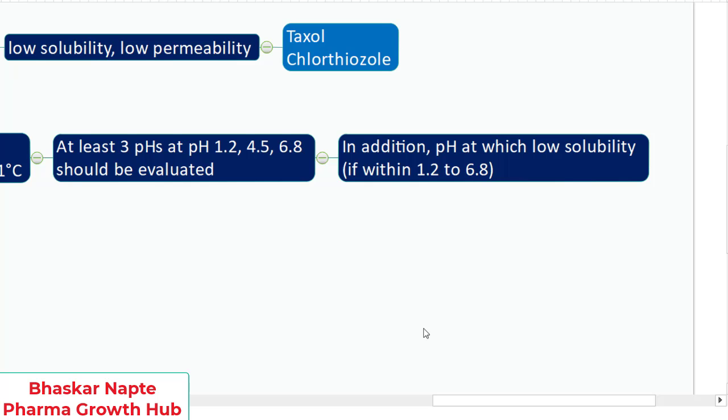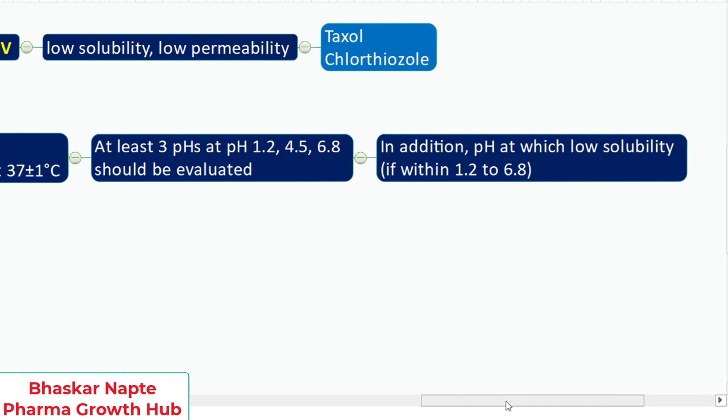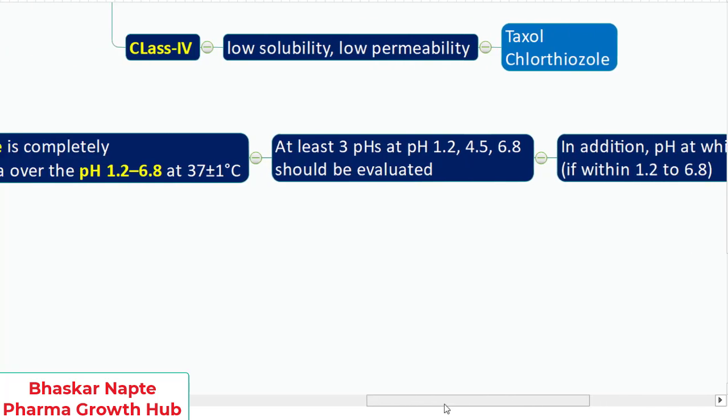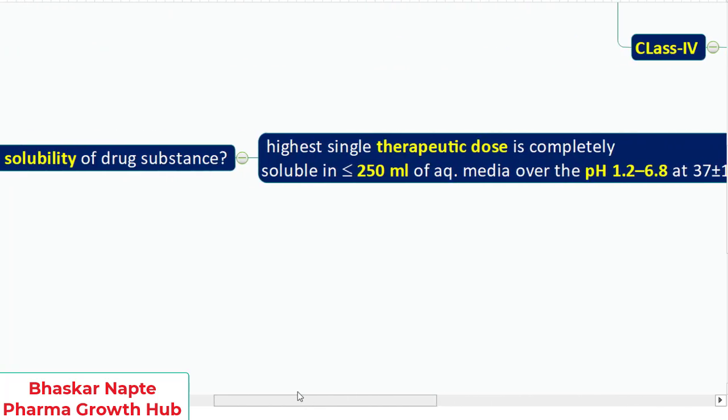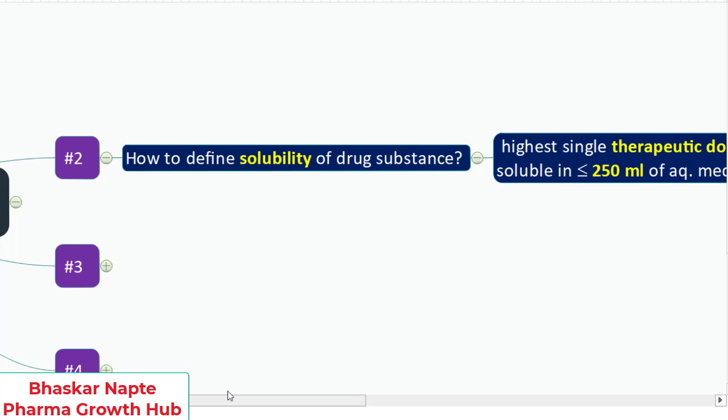Shake flask method can be used for defining the solubility. Minimum three preparations are preferred while calculation of the solubility, which is also called equilibrium solubility.